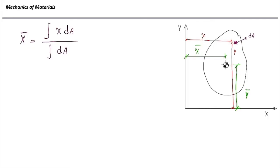Similarly, if we want to determine the location of the centroid from the x-axis, y-bar equals the integral of y dA divided by the integral of dA. The integral of dA is simply the total area of the section. The integral of y dA is analogous to moments — each small area dA acts like a force, and moment equals arm distance multiplied by that force. So x-bar and y-bar represent the first moment of area divided by area.